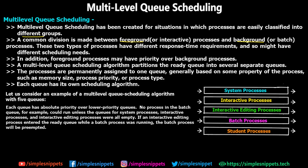These types of processes have different response times, different requirements, and different scheduling needs, so they have to be processed in different ways. Foreground processes may have higher priority over background processes because you don't want your currently running application interrupted by a background process. Let's consider an example with five queues. Each queue has its own priority, and each queue has absolute priority over lower-priority queues.